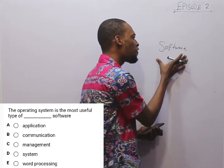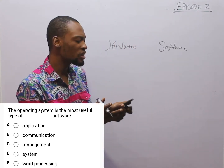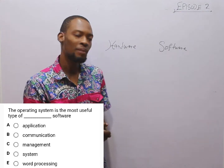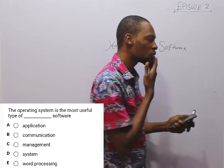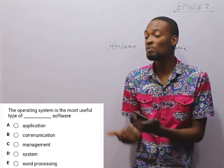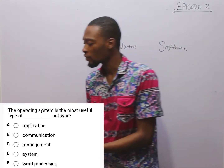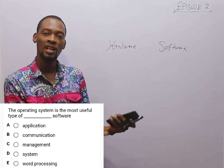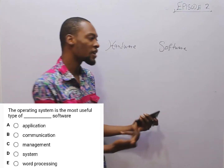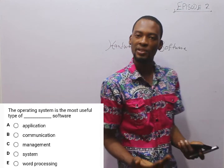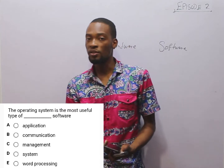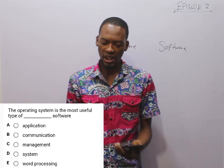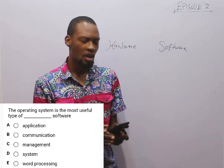Software consists of programs which the computer runs on. For example, if you are using a Windows laptop, when you turn it on, you see Windows — Windows 7, Windows 8, Windows 8.1, Windows 10, or Windows 11. As at the time of recording this video, Windows 11 is the latest Windows. So, those are software — they are the programs that run.